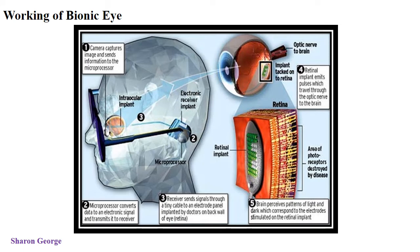The camera is fitted in the frame of the glasses worn by the blind person. The size of the camera is very small so that it can fit in the glass frame. The camera captures the image as input data. The image is then converted into electronic signals by an array of microprocessors, which convert the image data into electronic signals and transfer them to the receiver. The receiver then sends the signal through a tiny cable to the electrode panel that is implanted on the back wall of the eye.